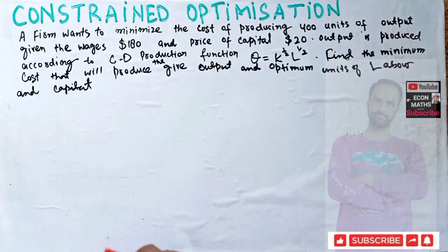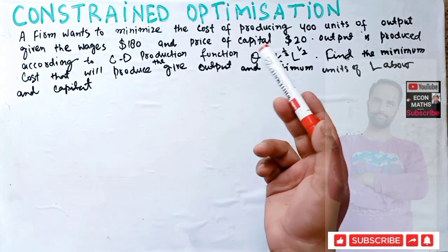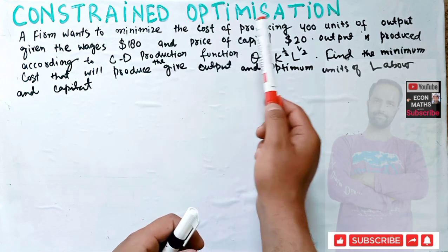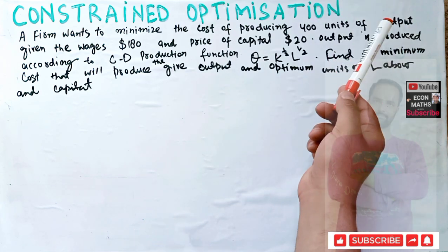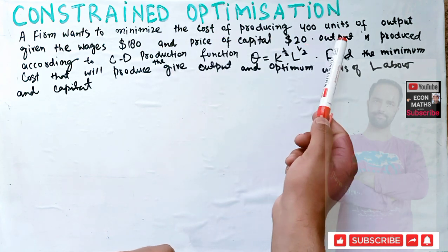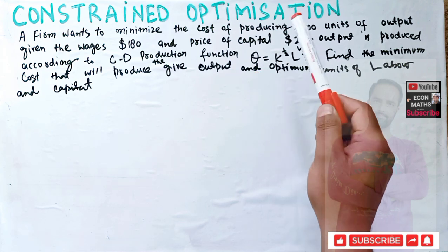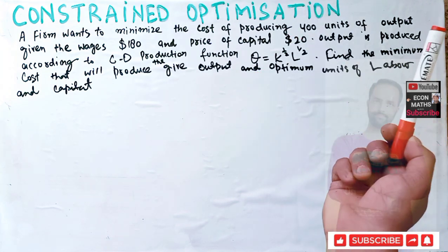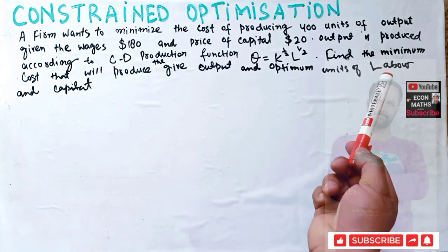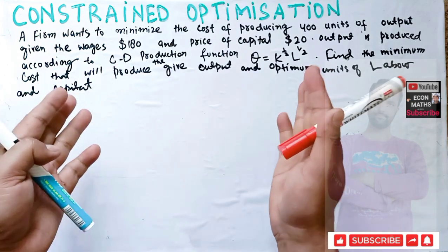In this video we will solve a question asked on the Telegram channel of Econ Methods. The question is on constrained optimization. A firm wants to minimize the cost of producing 400 units of output, given wages of $180 and price of capital $20. Output is produced according to a Cobb-Douglas production function: q = K^(1/2) · L^(1/2). Find the minimum cost and the optimal units of labor and capital.